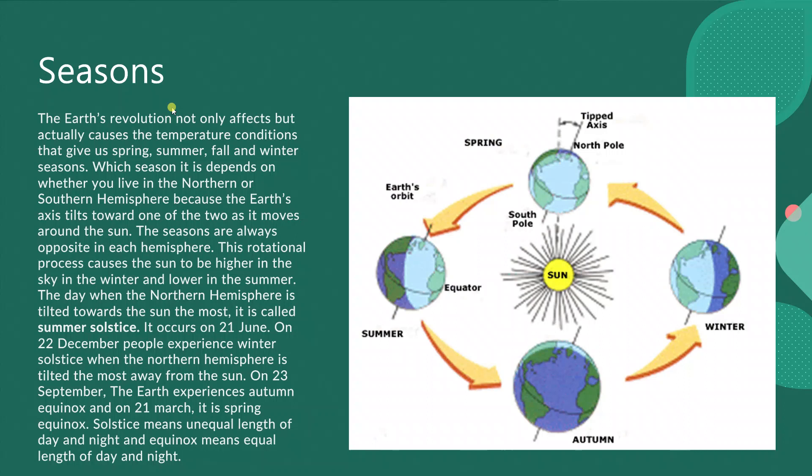The seasons are always opposite in each hemisphere. This rotational process causes the sun to be higher in the sky in the summer and lower in the winter.